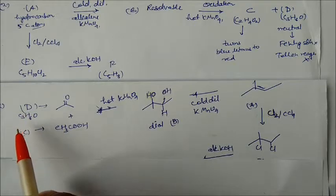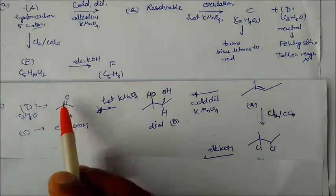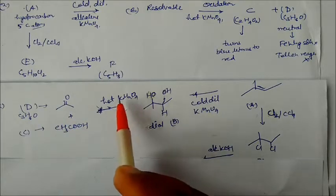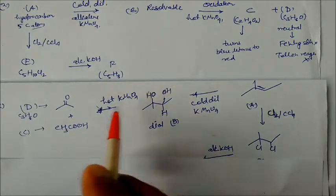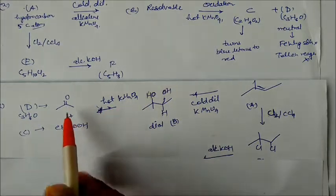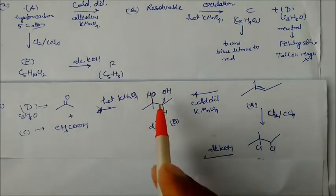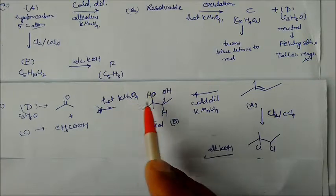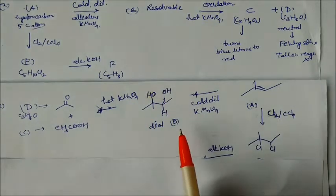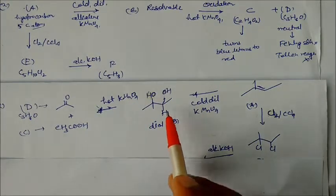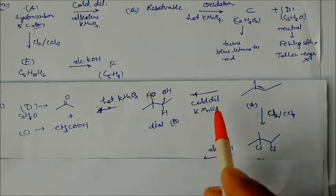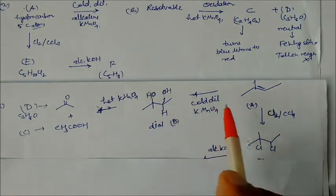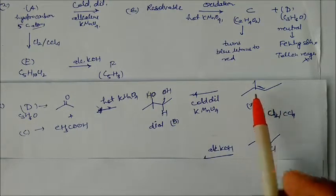D is acetone and C is acetic acid, both produced by hot KMnO4. Going retro synthesis, these two must come from a diol compound — breaking the diol gives alcohol that converts to acetone and carboxylic acid. Going further back, cold KMnO4 on a double bond gives the diol.